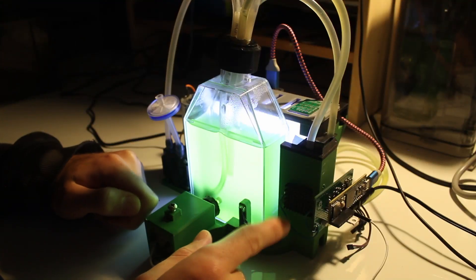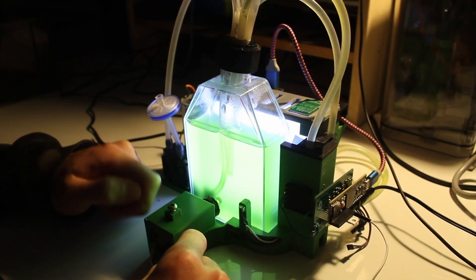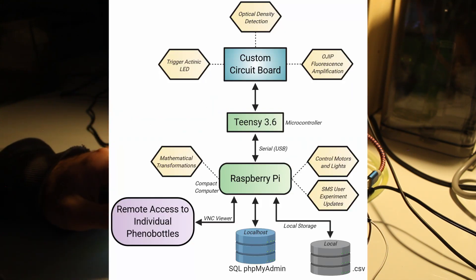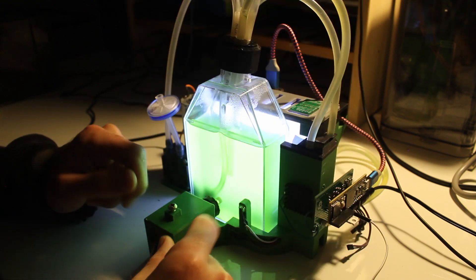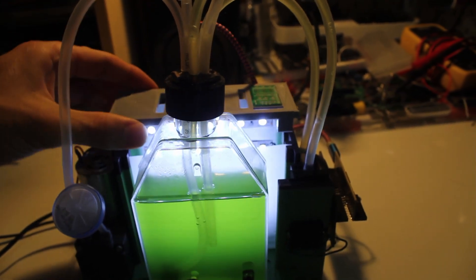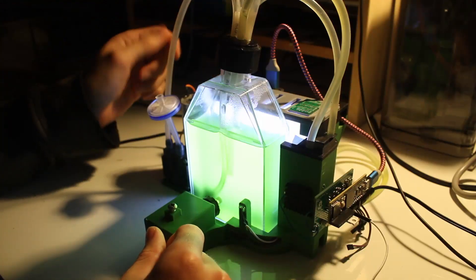All the information is then sent back to the Raspberry Pi, which allows it to be sent to a database or to a CSV file on the computer. The Raspberry Pi also has controls over a few motors and the light intensity for the growth lights at the back here.